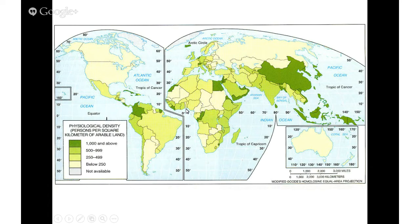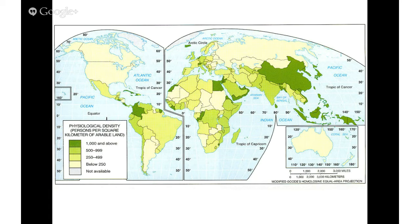The last type is agricultural density. On page 49 in your text at the bottom, there's a map. The darker areas represent more farmers per arable farmland, and those are typically areas in more poverty situations because they have not mechanized their farm labor. The United States, for example, does not have a high agricultural density because we have a lot of machinery doing the work on our farmlands — so we don't have many farmers per hectare of farmland.